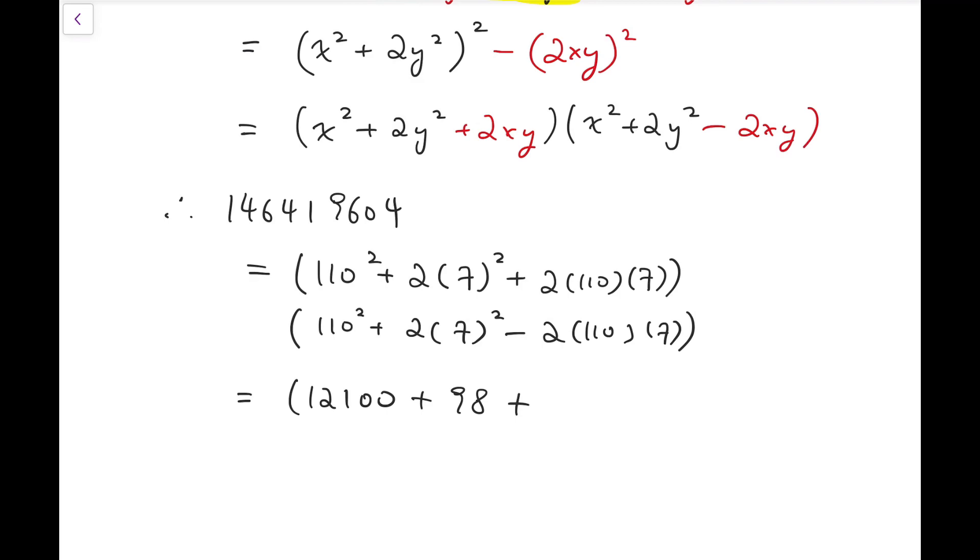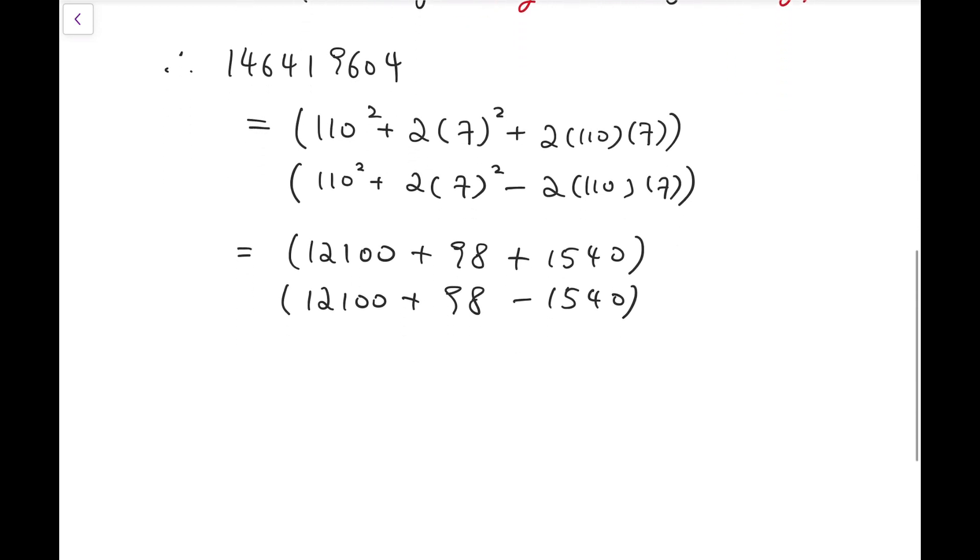So that's 110 squared is 12100, 2 times 7 squared is 98, and the third term is 1540. Similar applies to the second bracket, but we subtract 1540 instead.